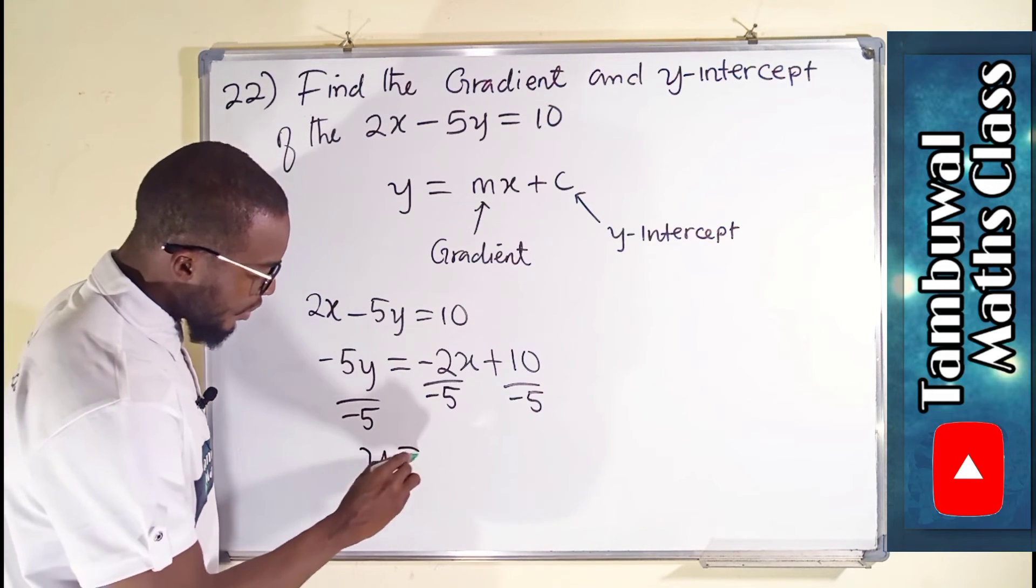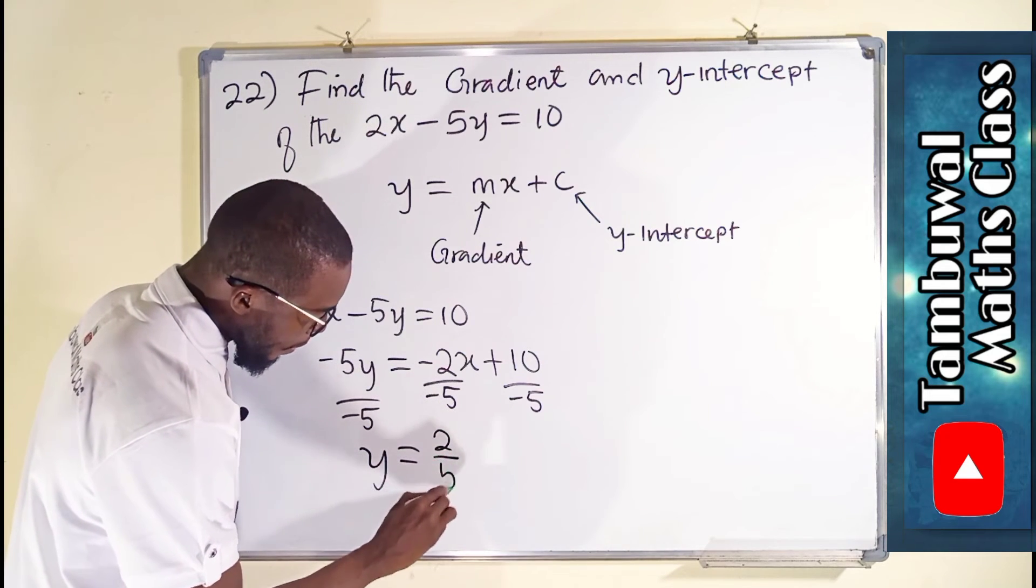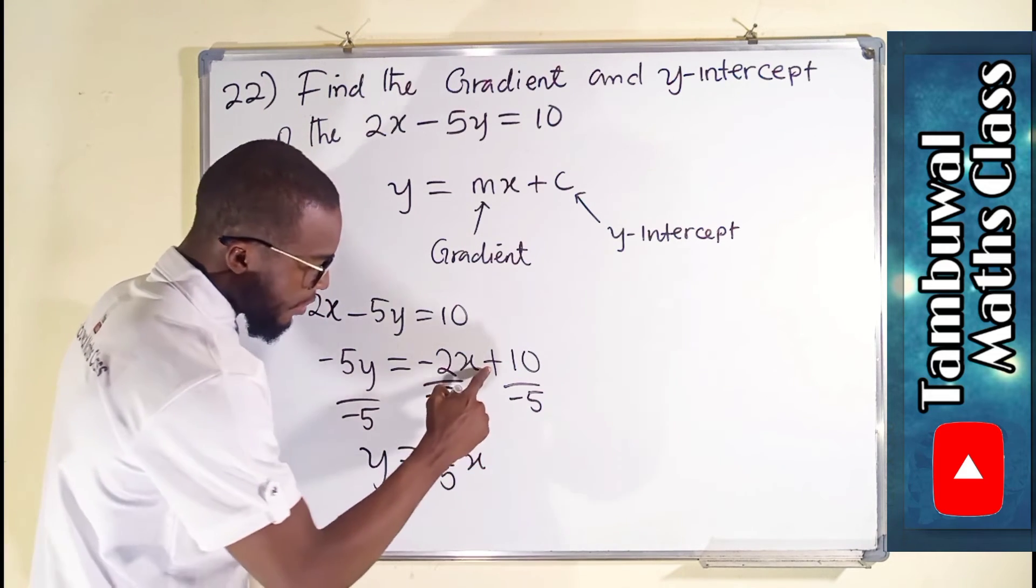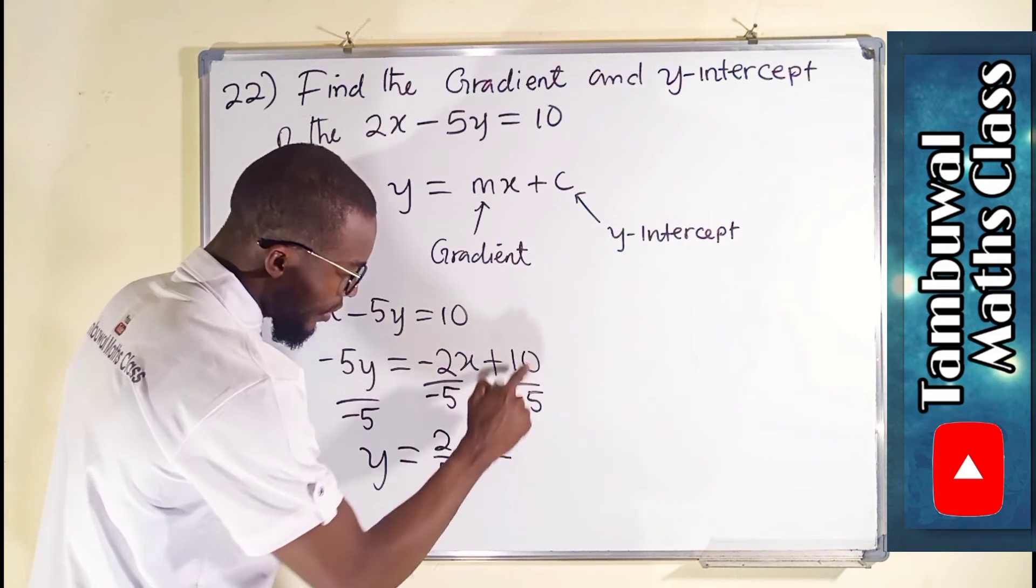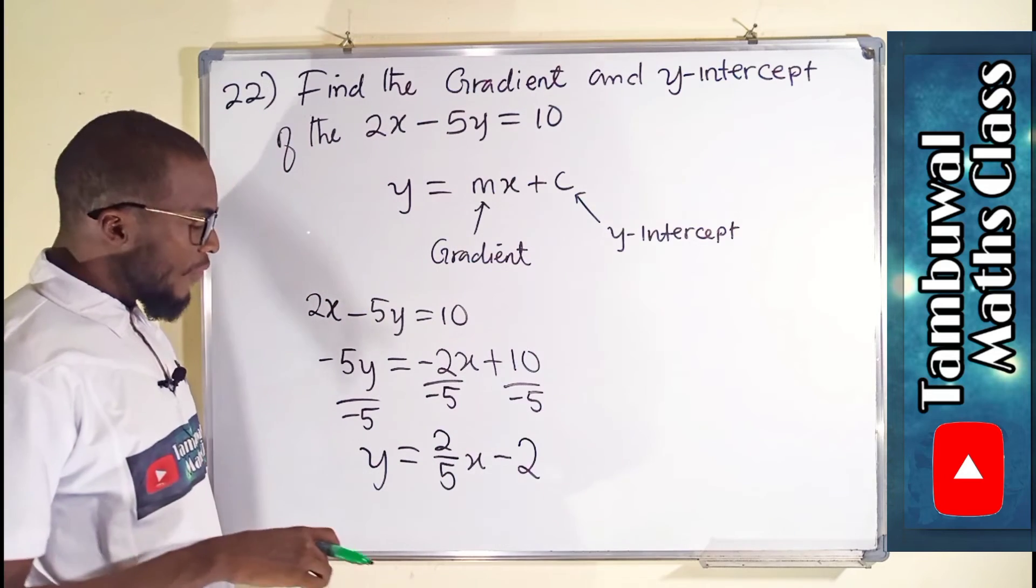Finally, y is now equal to this minus. We'll cancel this minus. We have 2 over 5x. Plus minus is minus. And we have 10 divided by 5 is 2.